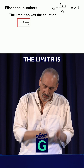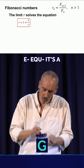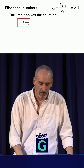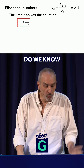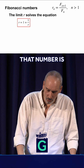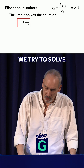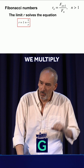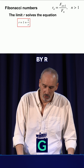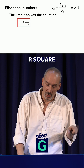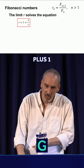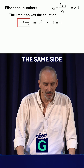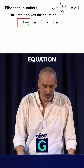The limit r is a number that's equal to one plus its inverse. How do we know what that number is? We try to solve the equation. We multiply both sides by r, so that gives me r squared equals r plus one, and put everything on the same side, so I get a quadratic equation.